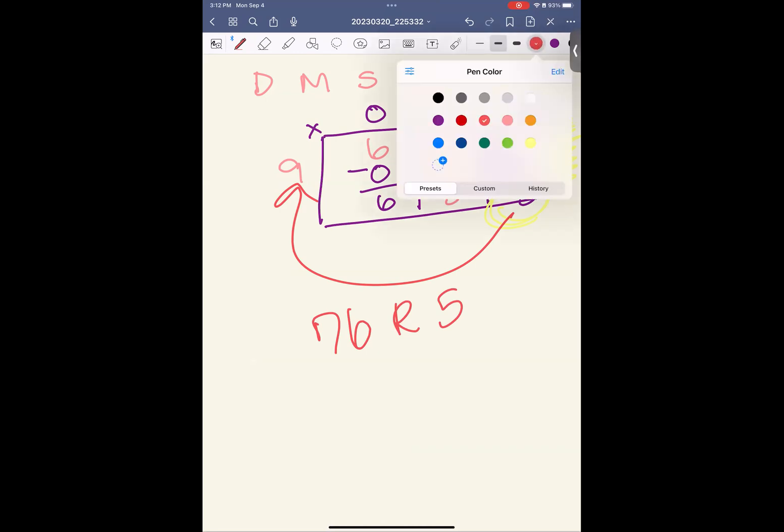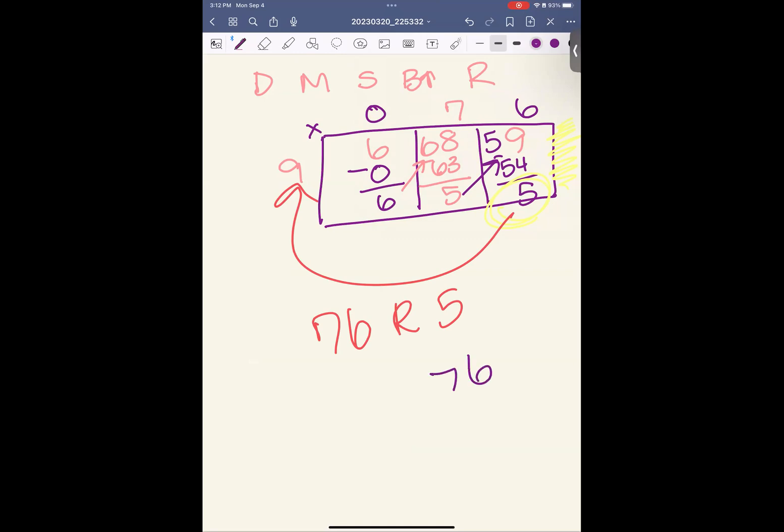But don't take my word for it. We can check our math. So I'm going to come over here and I'm going to take my answer, 76, and I'm going to multiply it by my groups, which was 9. 6 times 9 is 54. 9 times 7 is 63. Add 5 is 68. Don't forget to add your remainder. 689. That is the number we started with. So our answer is correct.